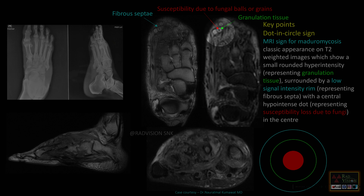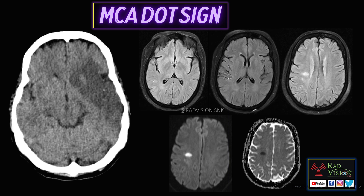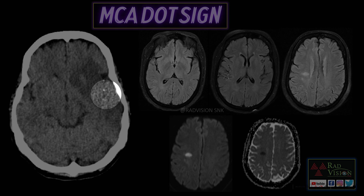To summarize the dot in circle sign: the central hyperintense area is granulation tissue, surrounded by a hypointense area representing fibrosepta, and the central hypointense dot is the fungus showing susceptibility artifacts. Remember: dot in circle sign in Madura mycosis.